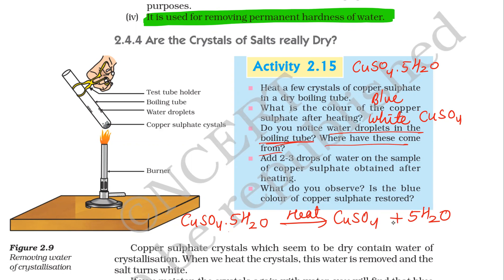These water droplets have come from this salt only. Now add two to three drops of water on the sample of copper sulfate obtained after heating. The white color of the copper sulfate — if we add a few drops of water, it will again become blue. What do you observe? It will again turn blue. Is the blue color of copper sulfate restored? Yes.